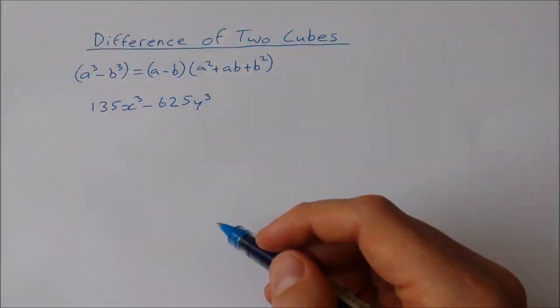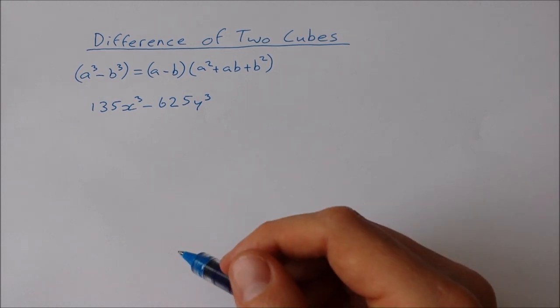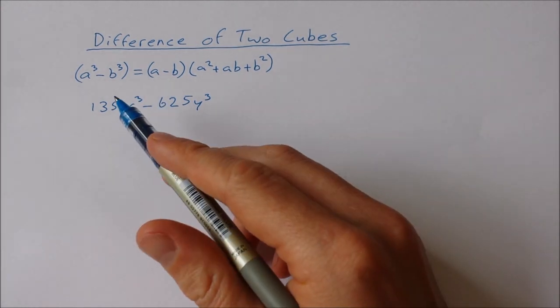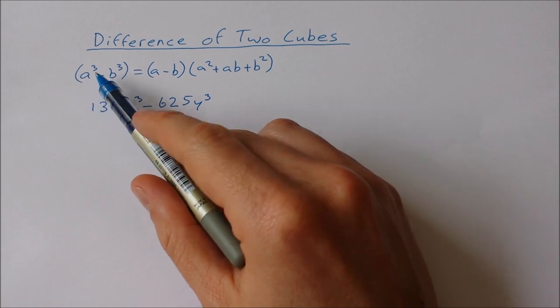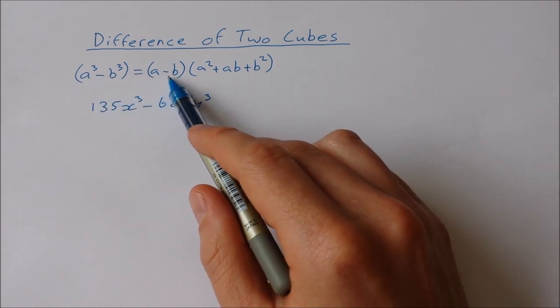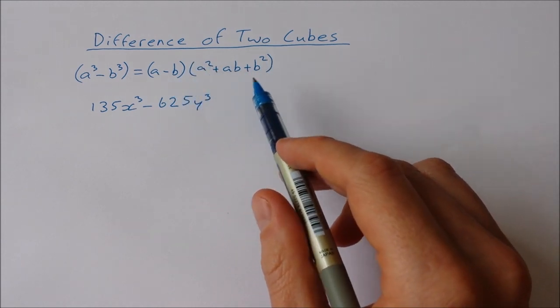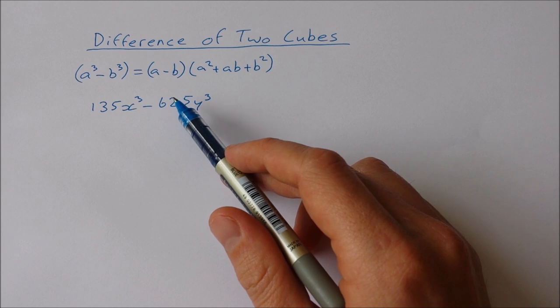In this video we're going to take a look at a more difficult example of the difference of two cubes. Just a reminder of the formula for the difference of two cubes: we have a³-b³ equals (a-b)(a²+ab+b²). Now the example that we're going to look at in this video is 135x³-625y³.